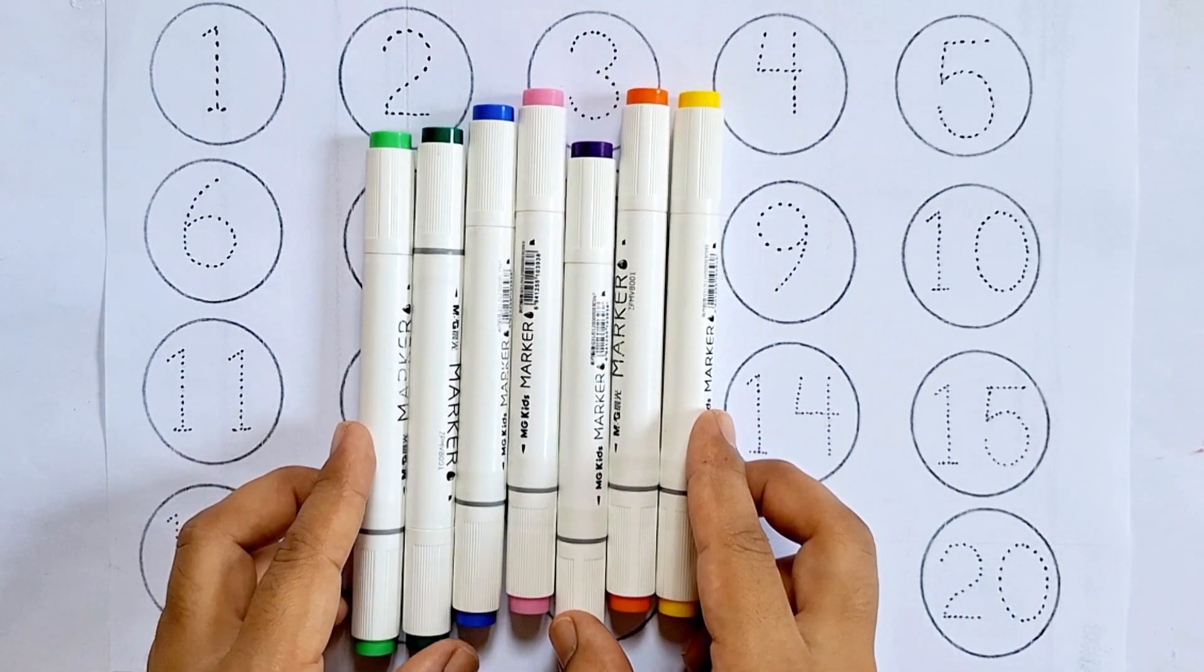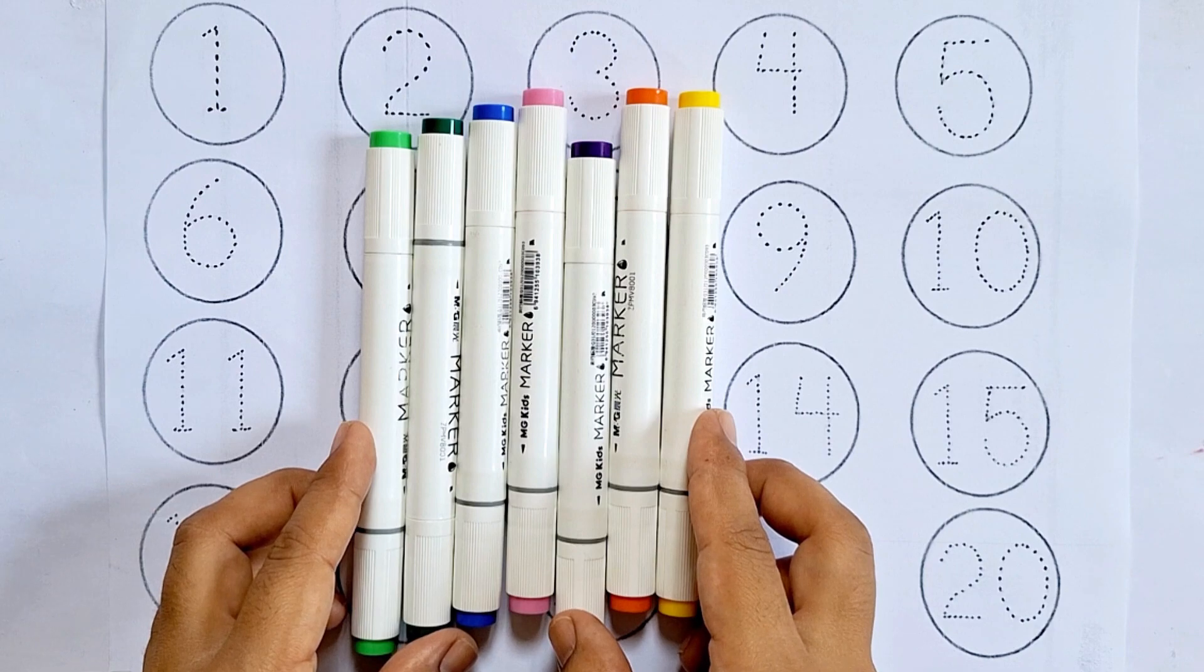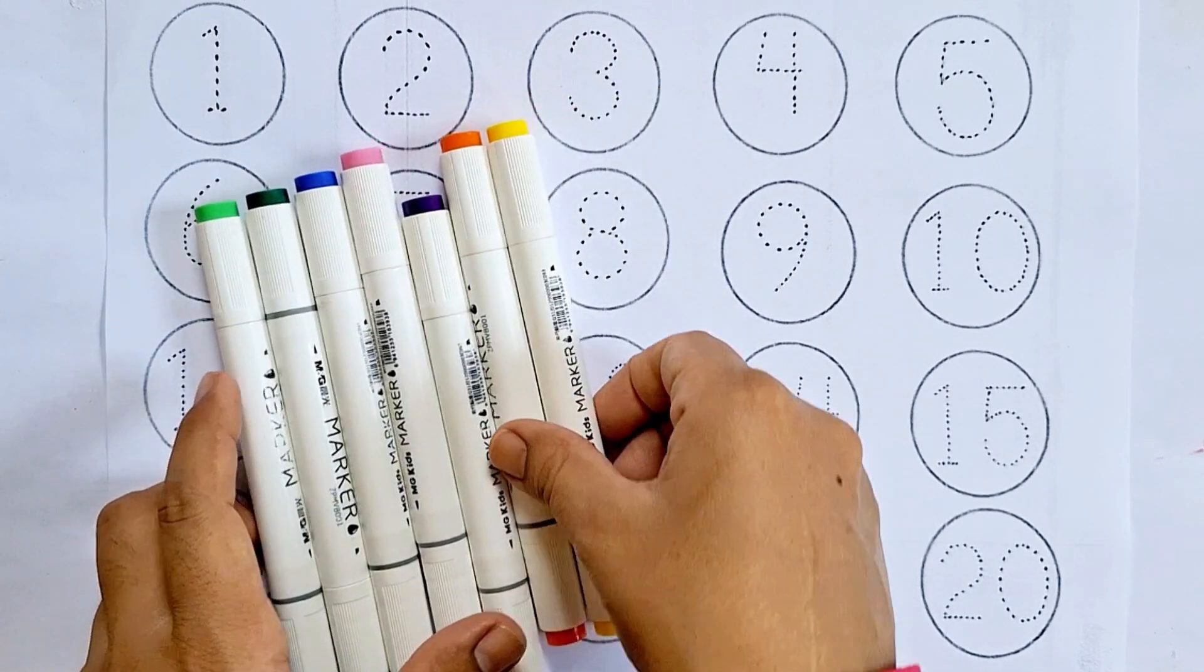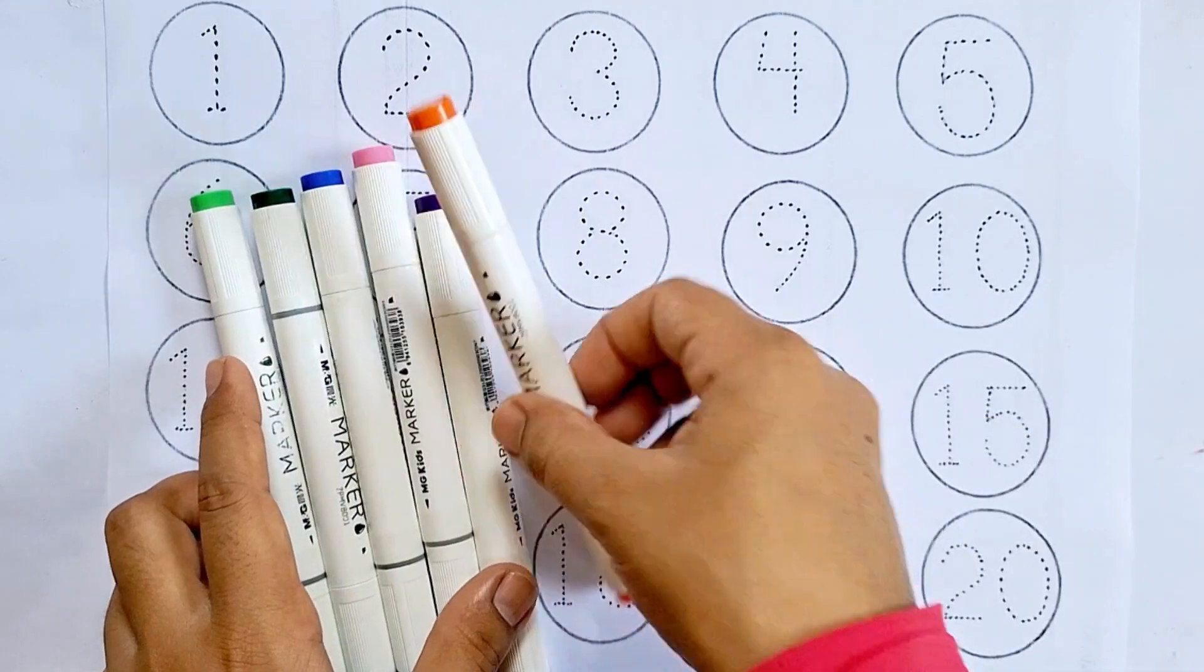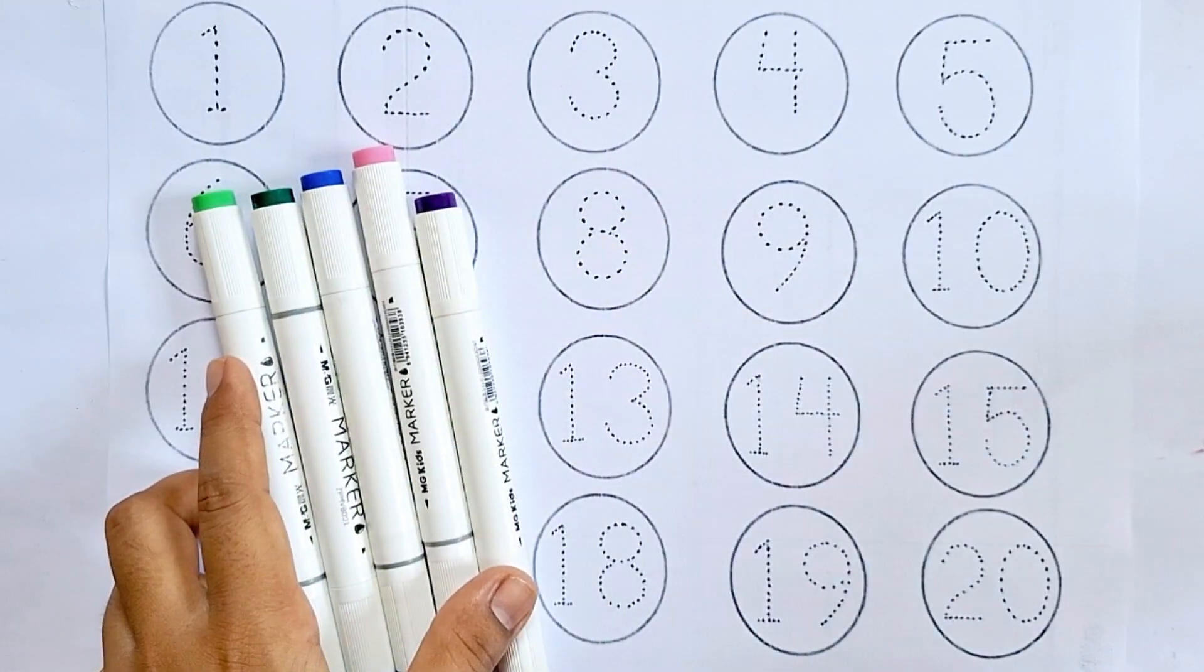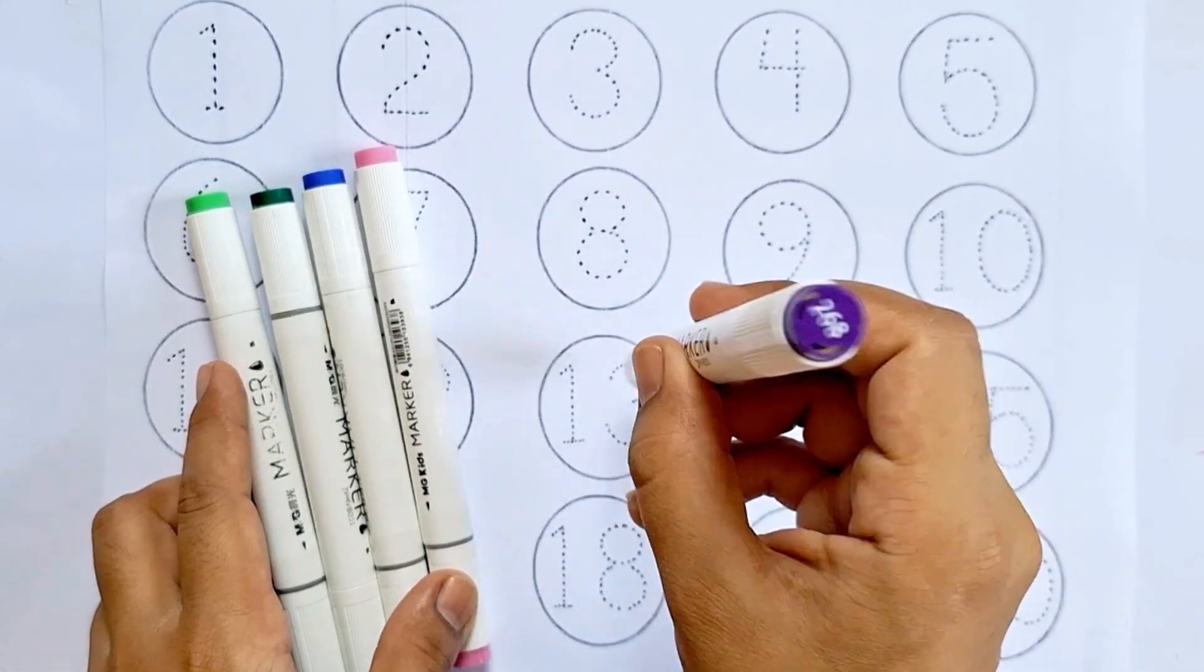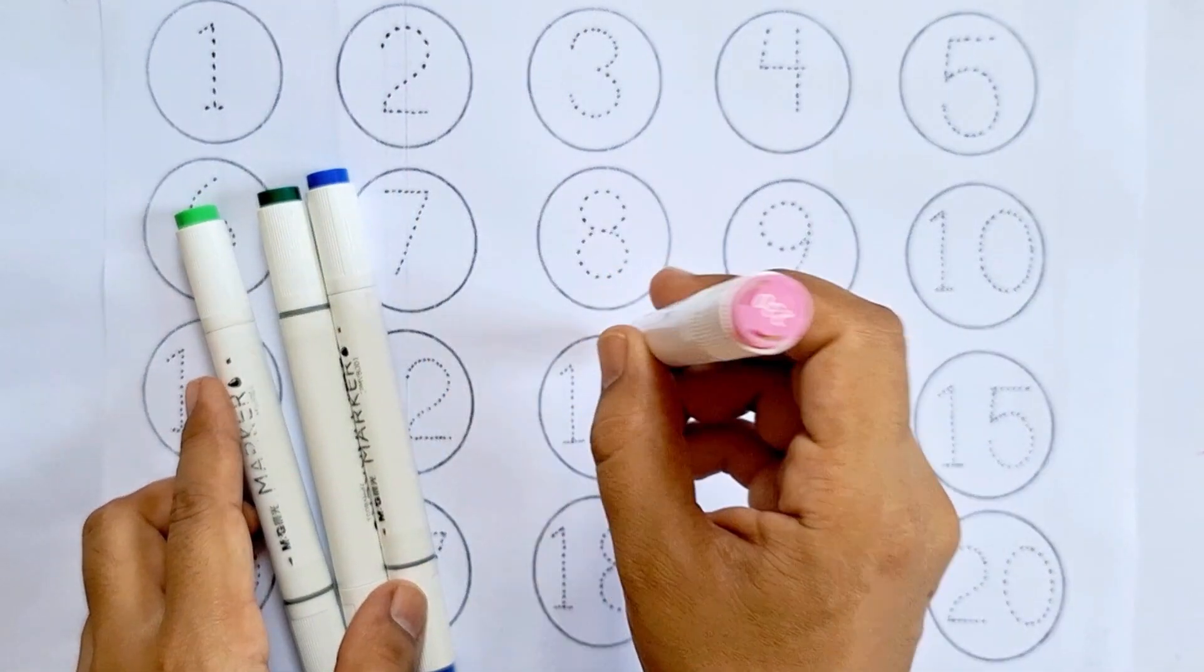Let's get started, but before we begin, let's learn some color names: yellow color, orange color, purple color, baby pink color.